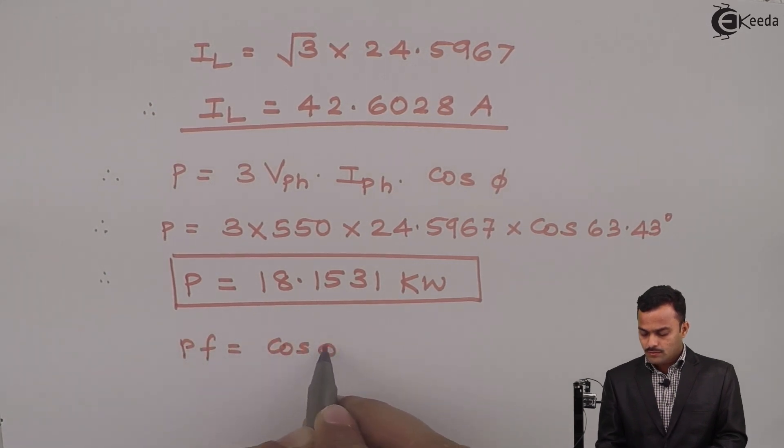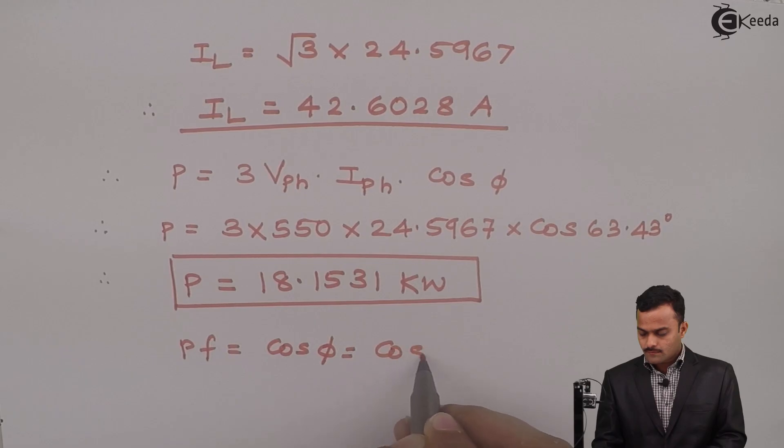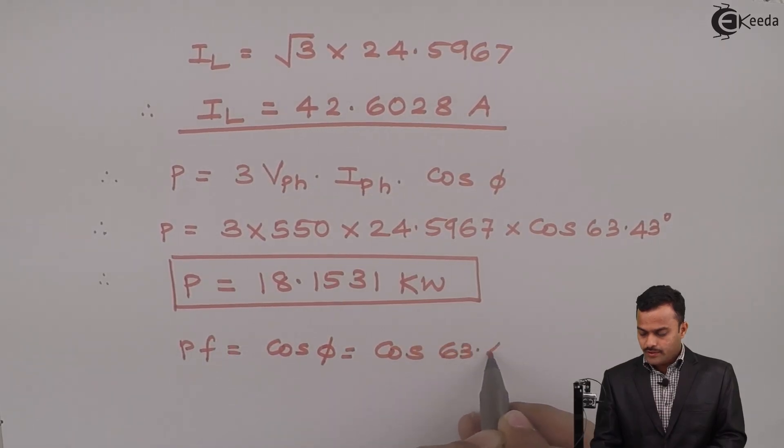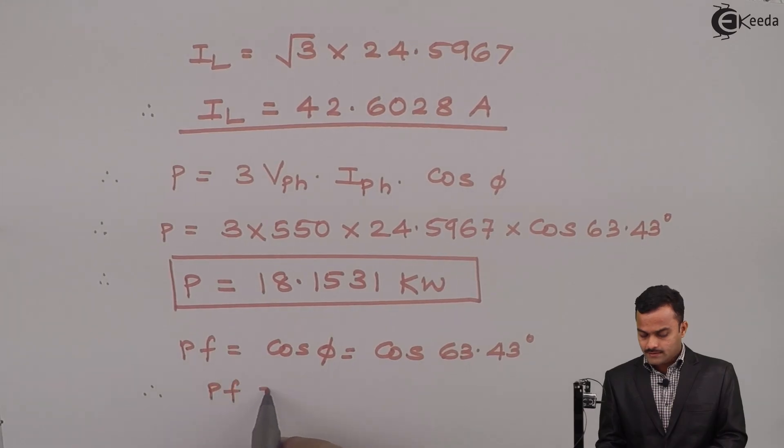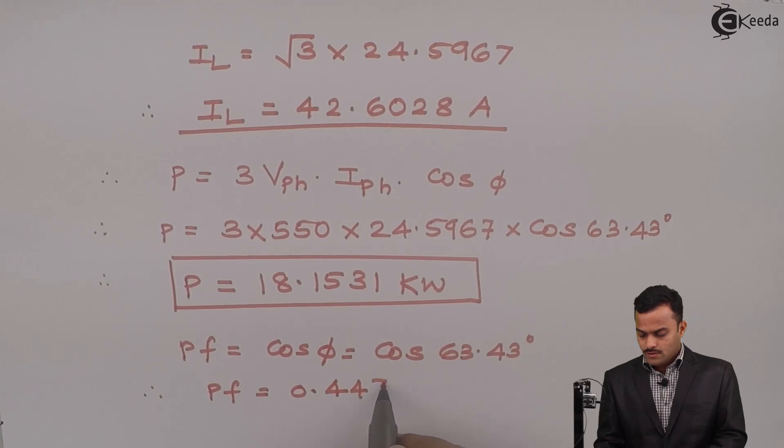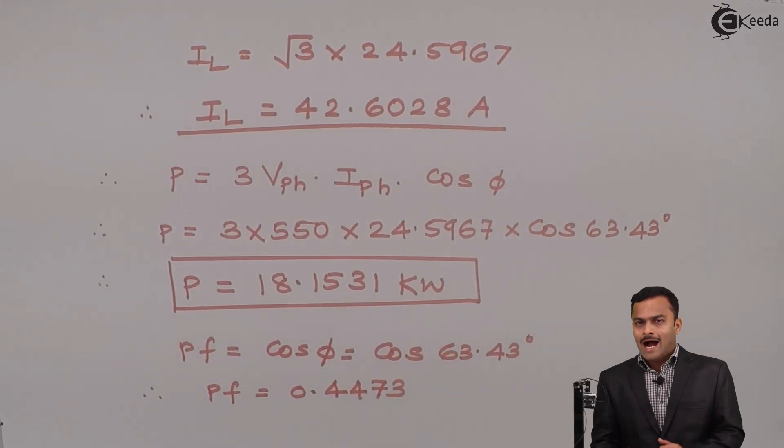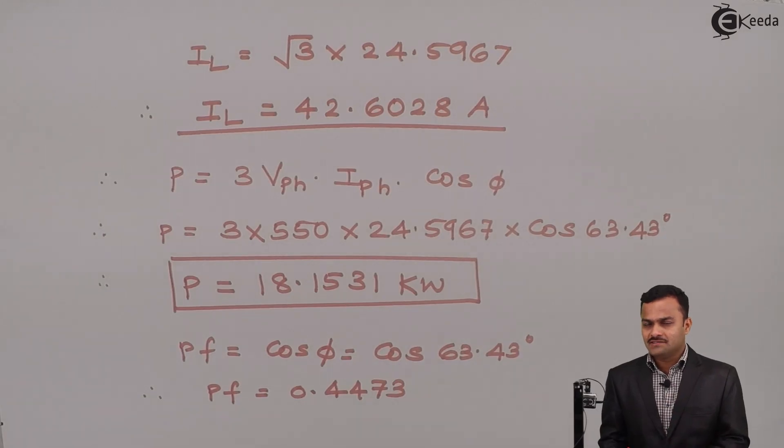Let's find out power factor. So power factor is cos phi equal to cos 63.43, so the power factor I will get 0.4473. How to determine its nature? ZPH angle we got positive, so whenever we get impedance angle positive that circuit is inductive and for inductive circuit power factor is lagging.